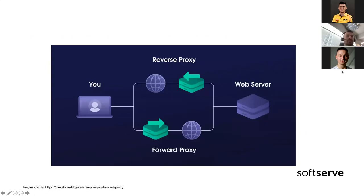To summarize: a forward proxy ensures that the website never communicates directly with the user — you hit the forward proxy and then it goes to the internet. With a reverse proxy, the request is redirected to a particular web server.